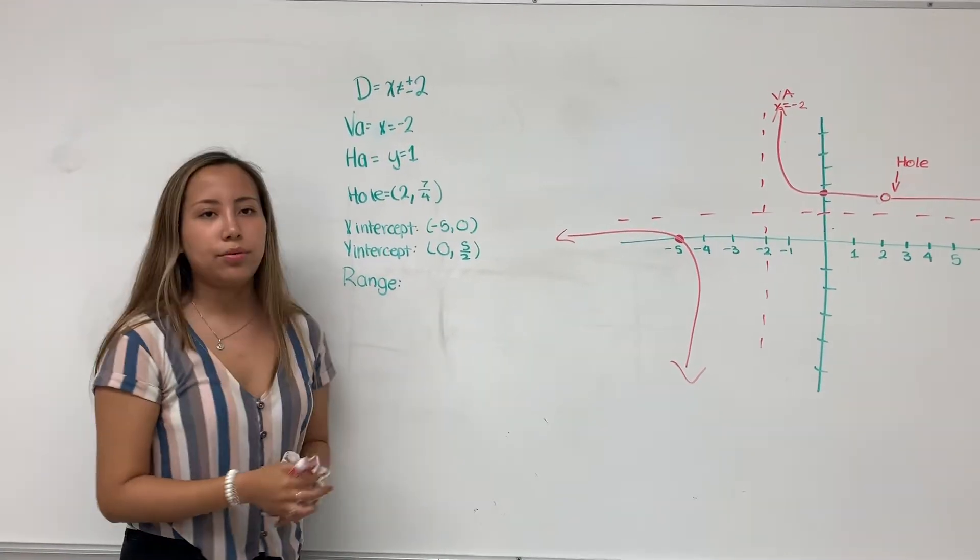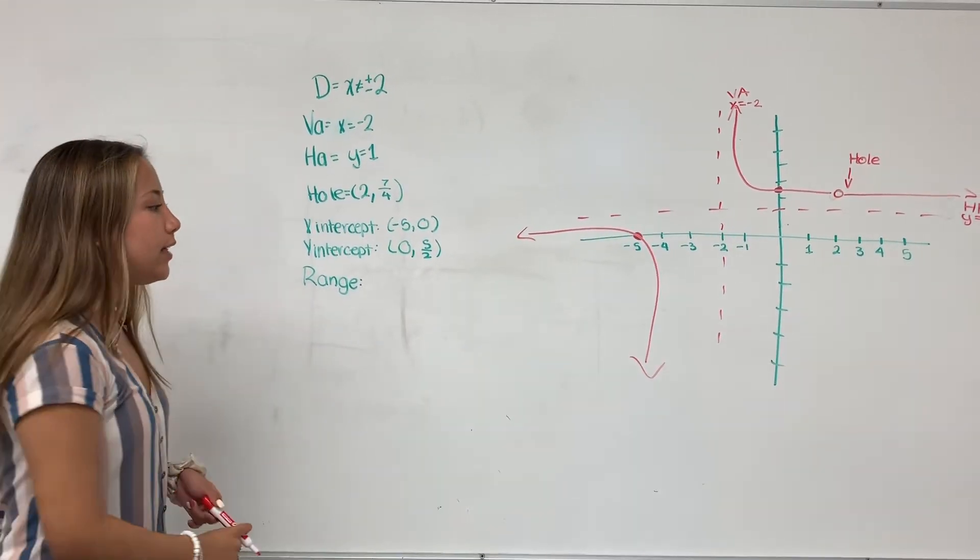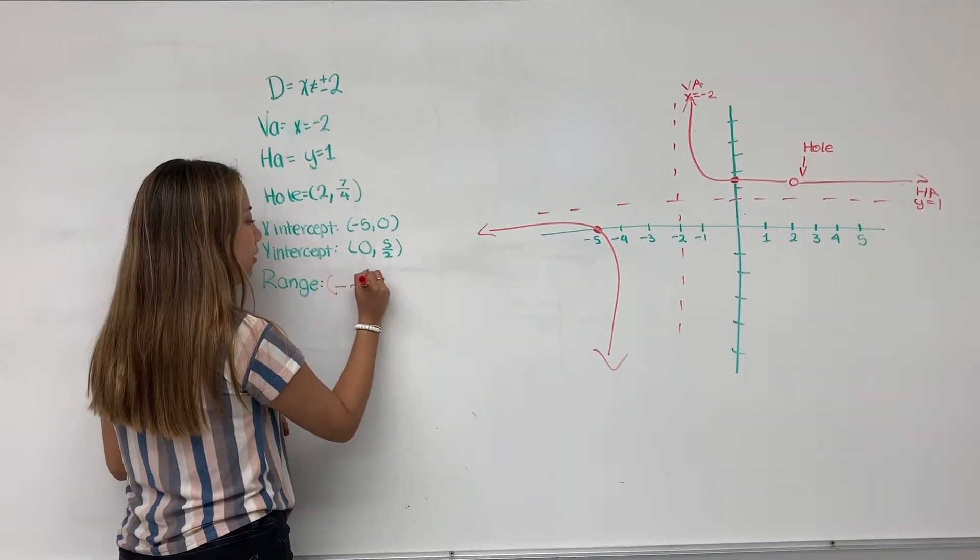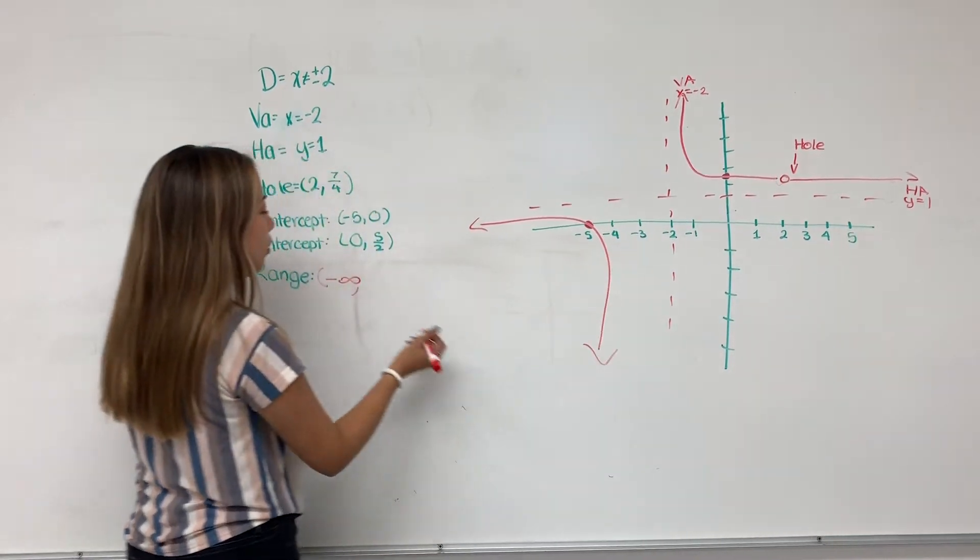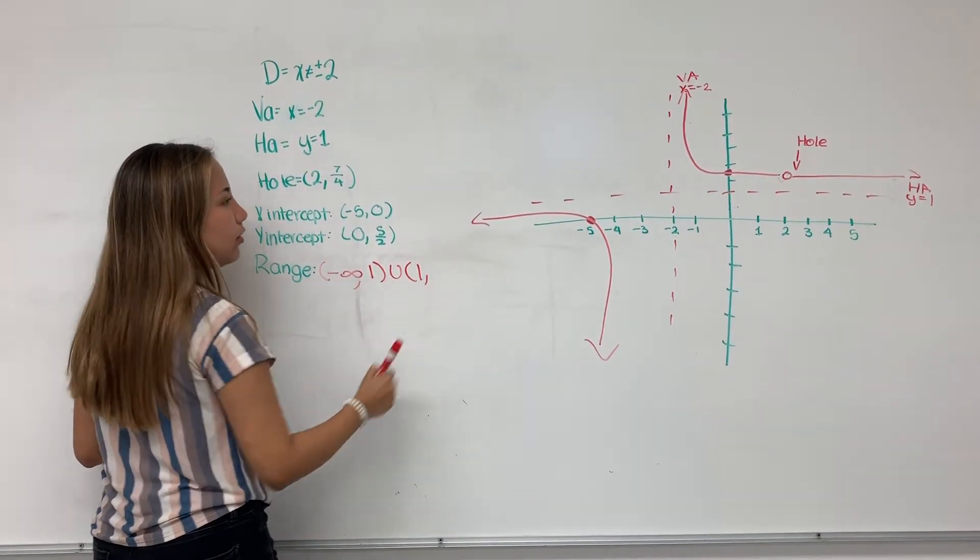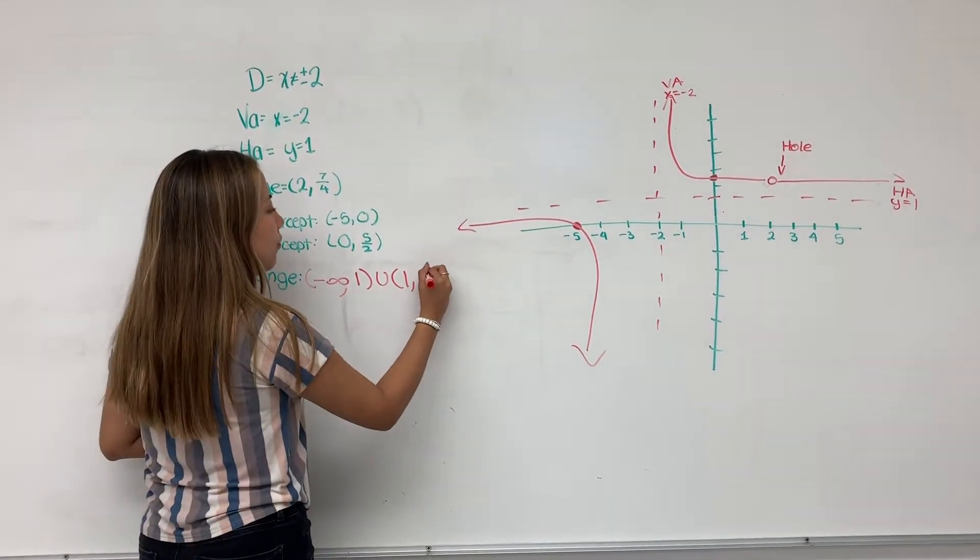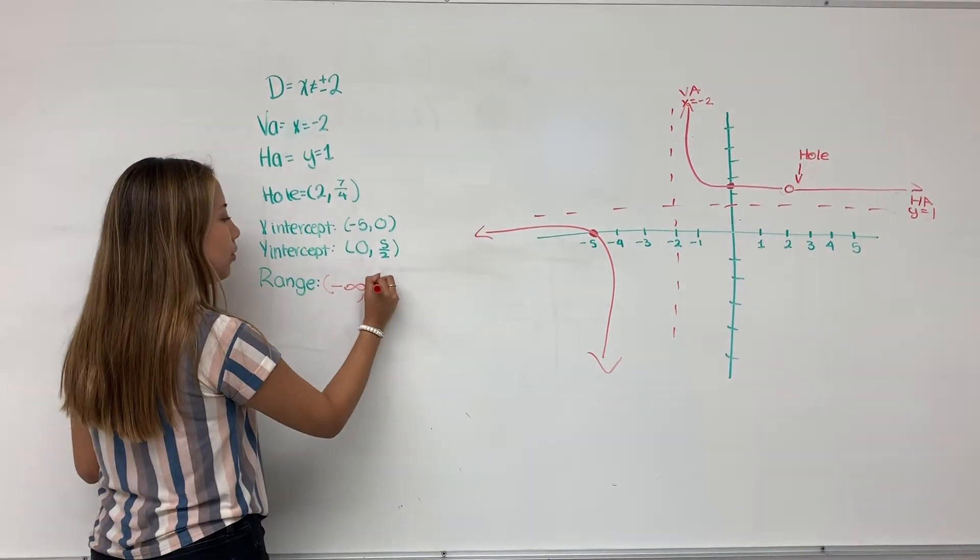And our last thing to do is to find the range. If you don't have a graph, you cannot find the range. In this case, it goes from negative infinity and stops at the horizontal asymptote, that is 1. Union with 1, and then we have a hole at 7 fourths.